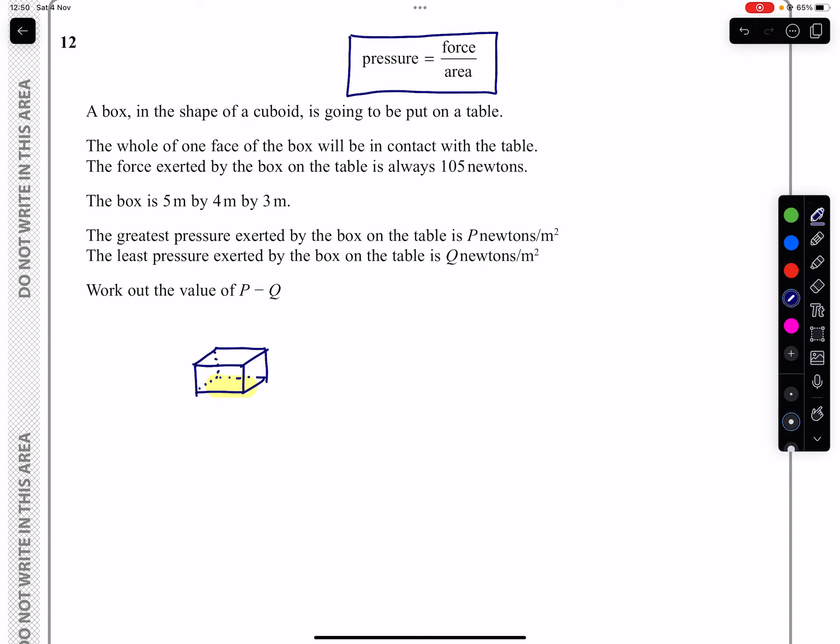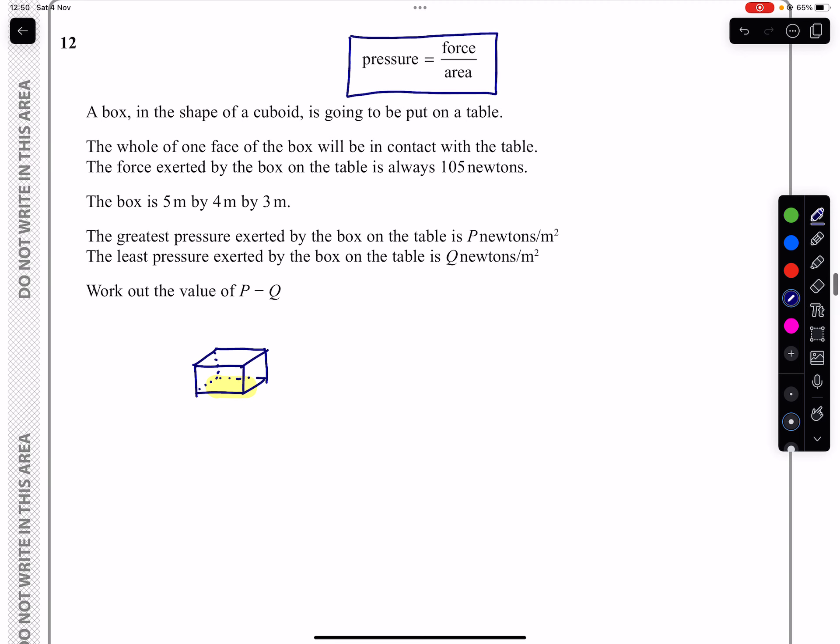And we are told that the force exerted by the box on the table is always 105 newtons. So we know that our force is 105 newtons no matter what.